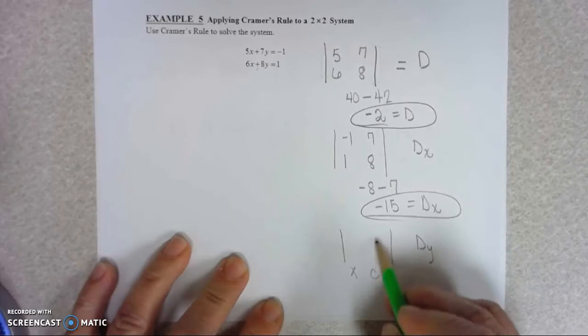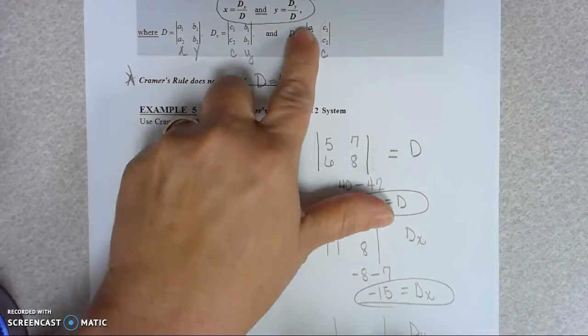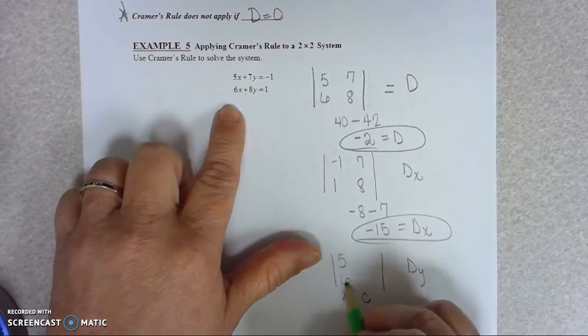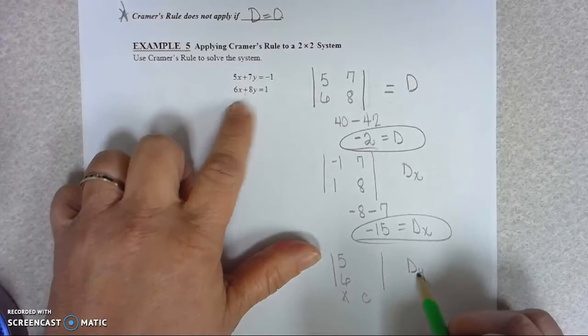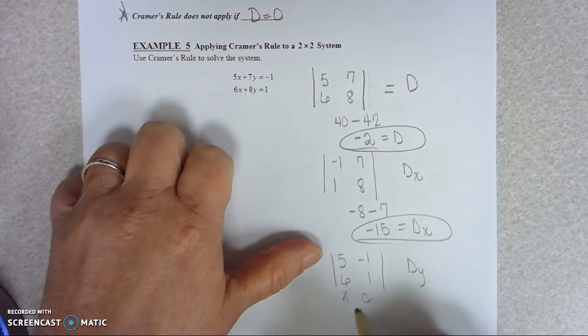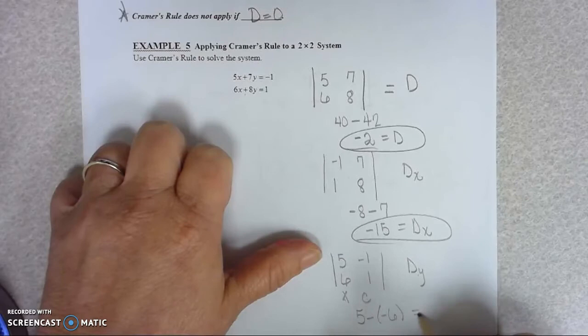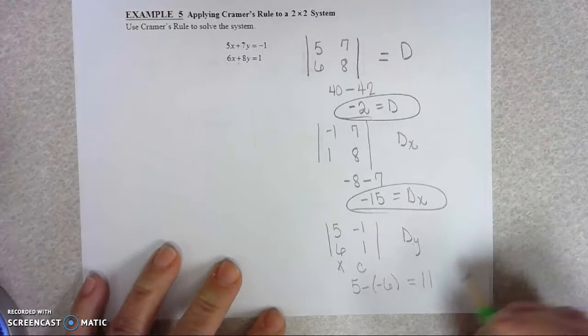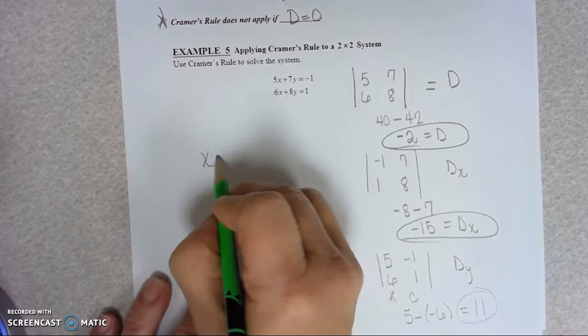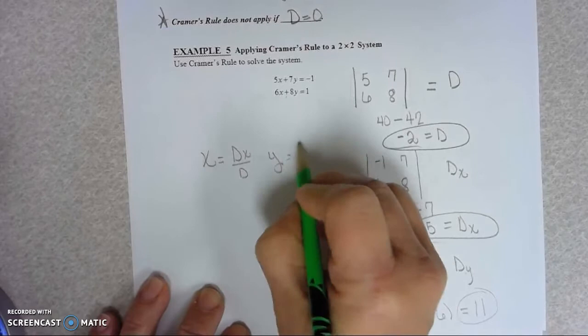Let's find DY. We need X back, but instead of the Ys, we'll do the constants. So DY would be our Xs back, which are 5 and 6. And then our Ys, we don't want because we're finding DY. So we'll do our constants, negative 1 and 1. 5 times 1 minus 6 times negative 1. 5, basically 5 plus 6 is 11. So that is DY.